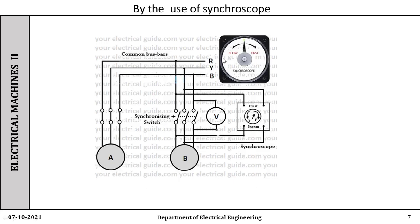The synchroscope consists of three inductive coils, one of which is connected to a single-phase supply. It shows whether the incoming machine is slower or faster. Machine A is already connected to the infinite bus bar; Machine B is the incoming machine; and there is the synchronization switch. We have to increase or decrease the speed and watch the pointer. When the pointer comes exactly to the vertical position, we can close the synchronizing switch. In this way, we have seen the use of the synchroscope for the synchronization of the alternator, along with the one dark and two equally bright method.